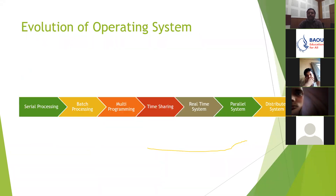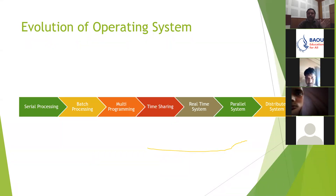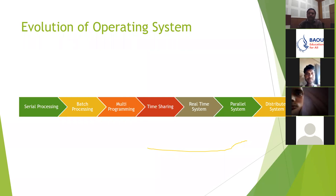Now let us understand how the operating system evolved. Today's operating system is called the modern operating system. From the beginning, how did it become so user friendly with so many features? Initially there was serial processing, then batch processing, then multiprogramming was introduced, then time sharing, real-time operating system, parallel systems, and finally distributed systems. The journey of operating systems started since 1950, and what we see today is the modern operating system.